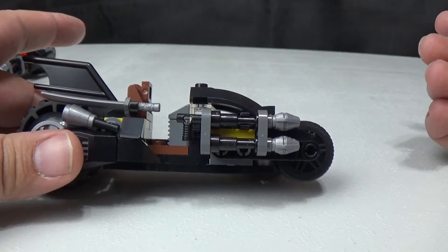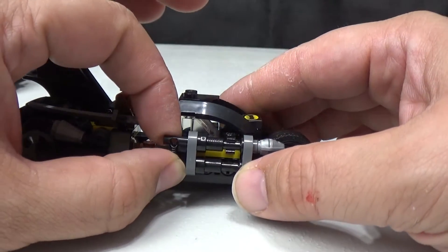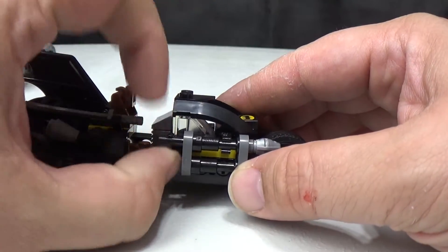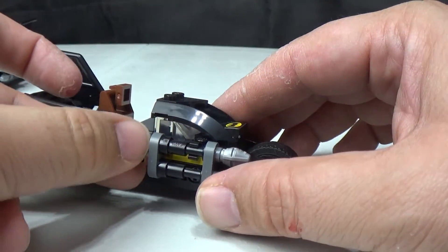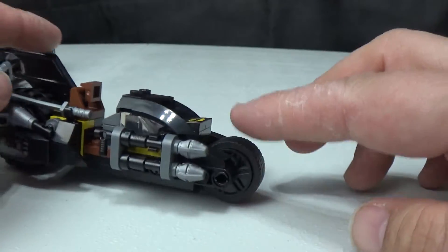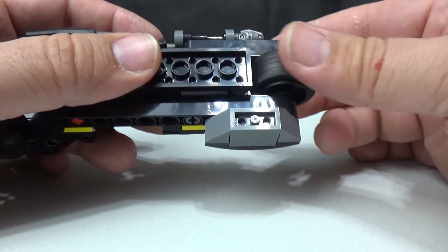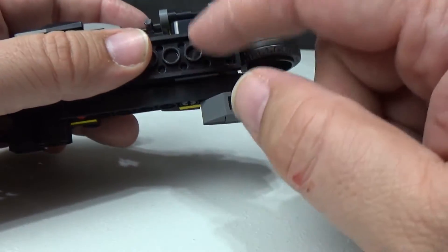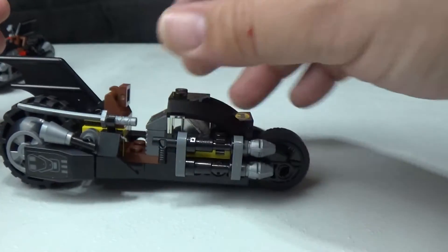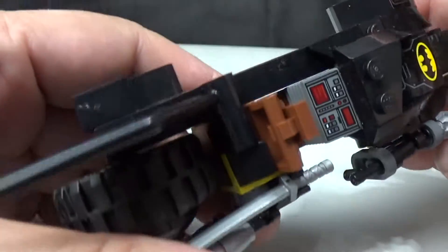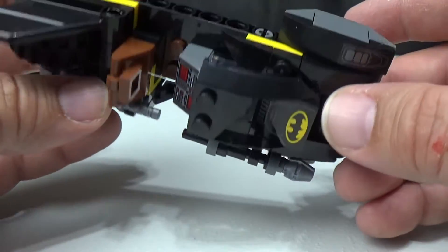This thing rolls, not very well. This wheel for some reason is rubbing against here so it doesn't roll very well, but it can roll if you push down. It has a lot of detail there - stickers. So there are stickers with this particular set. The Batmobile set came with I think like one sticker.